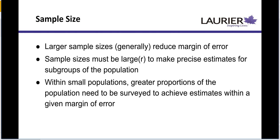Within small populations — where the population you're surveying is small and not particularly large — you really need to have a high proportion of the population in your sample in order to get decent estimates within your margin of error. The smaller the population, you actually need to cover more of them because it's just the nature of the beast. In a larger population, you can have a random sample and get a pretty decent estimate.